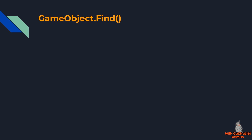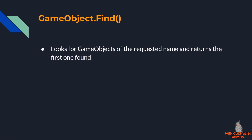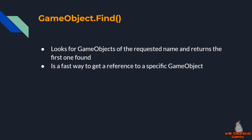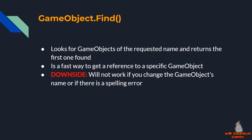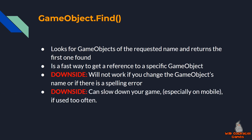Let's review GameObject.Find. It looks for GameObjects of the requested name via a string and returns the first object found in the hierarchy matching that name. It's a fast way to get a reference to a specific object as long as you know the name, but it will not work if you change the object's name or introduce a spelling error. Using it too often can also slow down your game, especially on mobile.